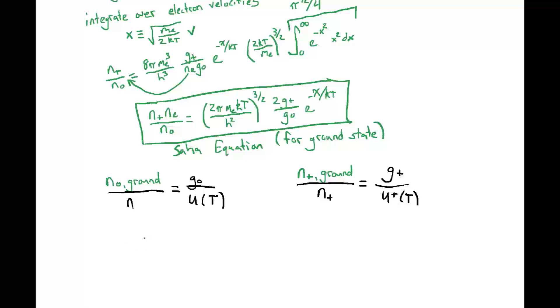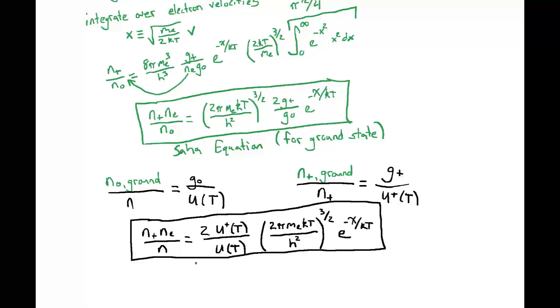So the full Saha equation then, generalized away from the ground state, is that n+ ne over n, where we're no longer requiring that these be ground states, is equal to 2 u+ over u times 2π me kT over h squared all to the 3 halves power times e to the minus chi over kT. And this right here is the full Saha equation.